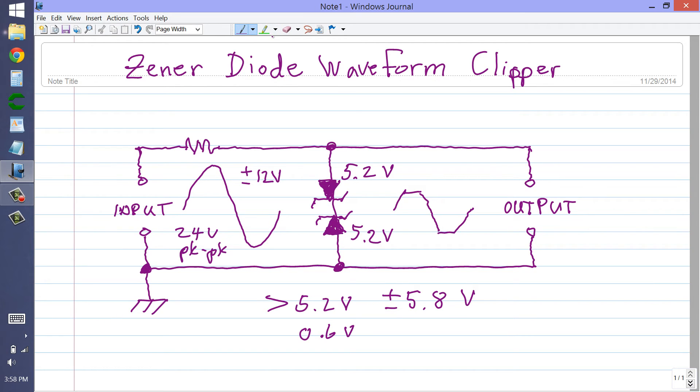So, this particular circuit will limit the peaks to plus or minus 5.8 volts, as opposed to plus or minus 12 volts. And you'll get a waveform that looks clipped or limited, something like that. You can adjust the value of the plus or minus peak clipping voltage simply by choosing the appropriate Zener diode.